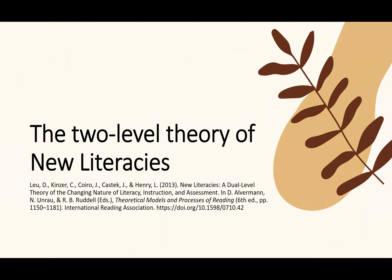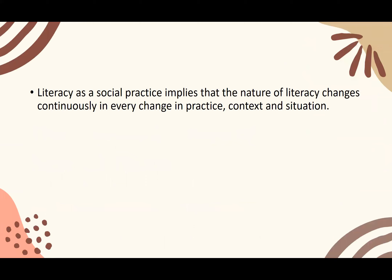Now let's go to the two-level theory of new literacies. This theory helps us organize the idea of literacy. Since literacy is a social practice, there can be many new literacies that emerge from social communicative practices — that's why the term is plural. As we move from one social practice to another, from one context to another, the nature of literacy changes continuously. There are multiple social contexts, therefore multiple literacies.